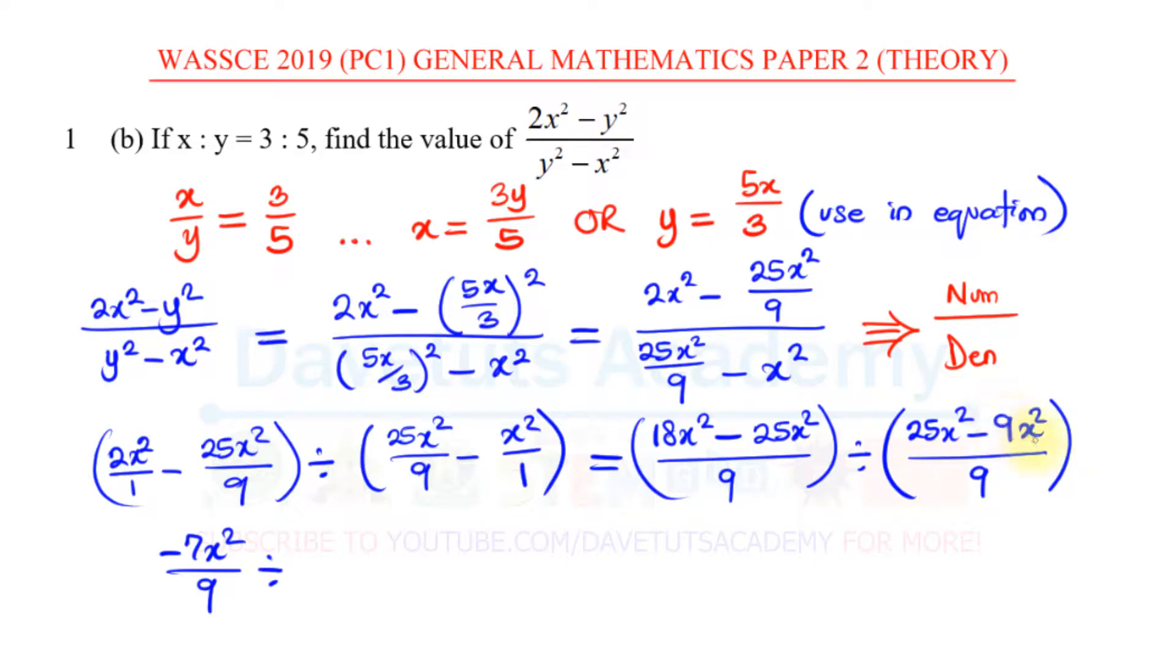Divided by 25x squared minus 9x squared, that will be 16x squared over 9. Now anytime we're having division like this, we know that we can rewrite the equation to be minus 7x squared over 9 times—now since we are changing the division to times, it will reverse the order of the numerator and denominator. So 9 will come to the numerator and 16x squared will come as the denominator, and with this you can just simplify: the 9 can divide this 9 and x squared can divide this x squared. So our final answer will now be minus 7 over 16.